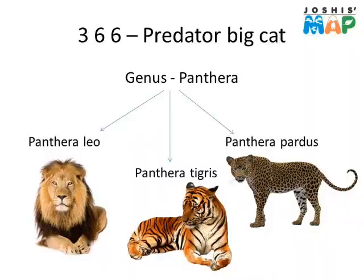It's a 366 predator — big cat. They're already in the group of the great big cats, the Panthera genus. In Panthera you have Panthera leo, Panthera tigris, and Panthera pardus. Panthera leo is the lion, Panthera tigris is the tiger, and Panthera pardus is the leopard. You also have Panthera onca, the jaguar, and Panthera uncia, the snow leopard. Taking the first three: the lion, tiger, and leopard — all three are 366. The predominant level is six, the capacity is six, and the base level is three.